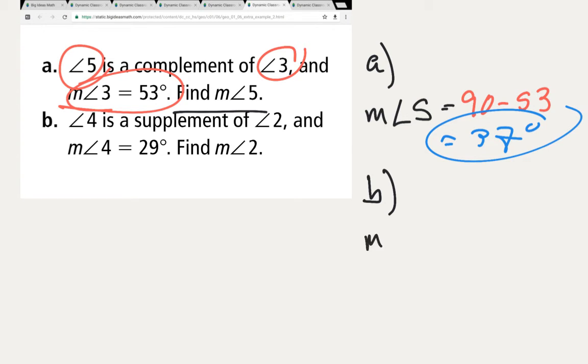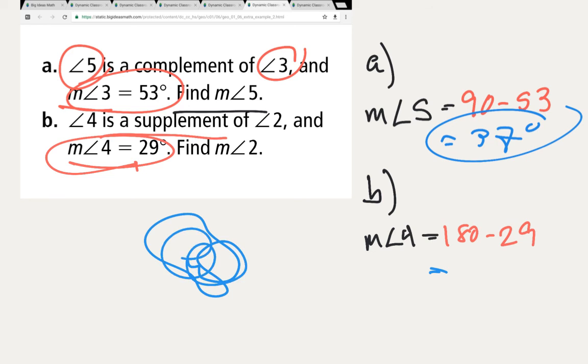We've got measure of angle 4 equals... supplement means they add up to 180, take away angle 4 is 29 degrees. So 180 minus 29, 180 minus 30 would be... oh sorry, I'm just going to get a little bit slow. 180 minus 30 would be 150, so it's 151, 151 degrees.